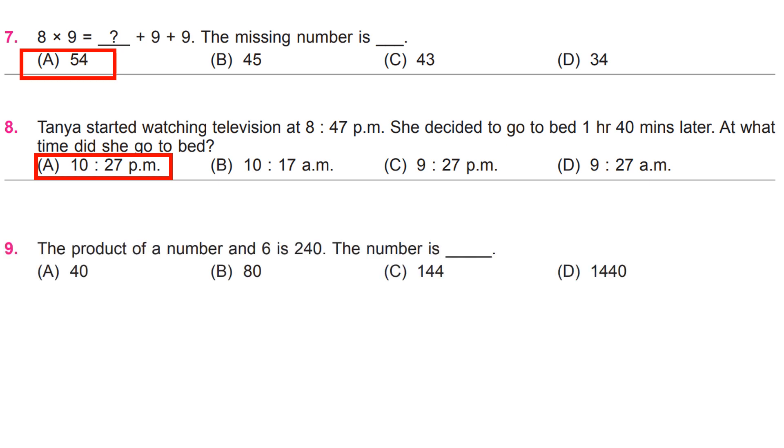The product of a number and 6 is 240. The number is A, 40.